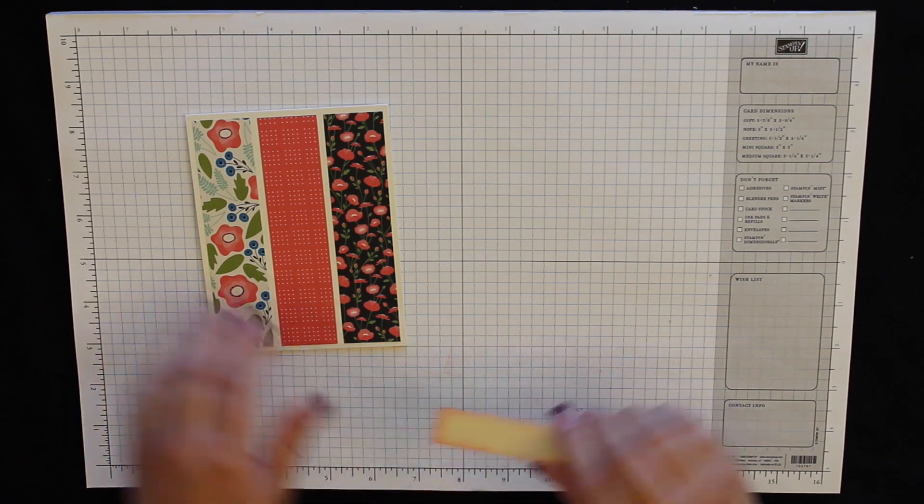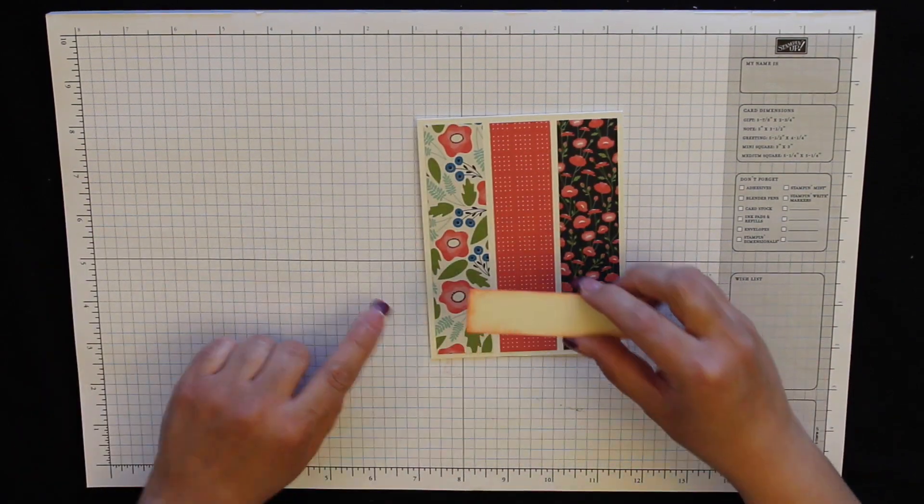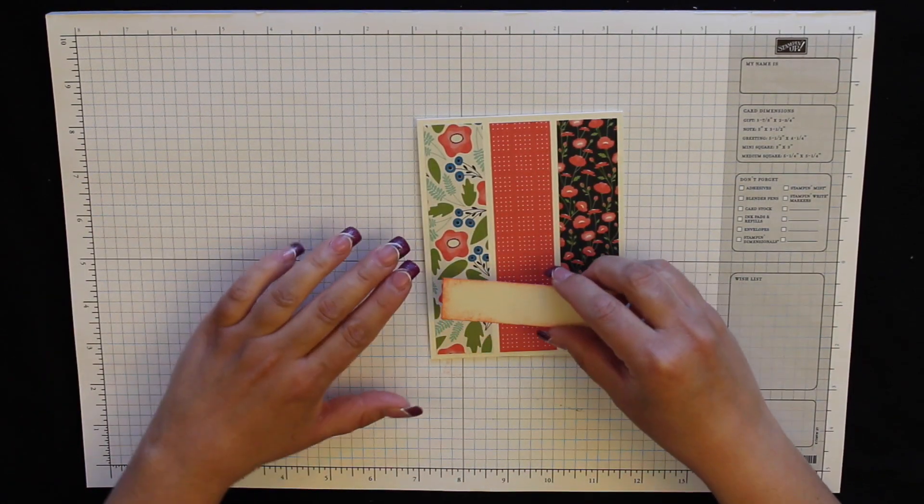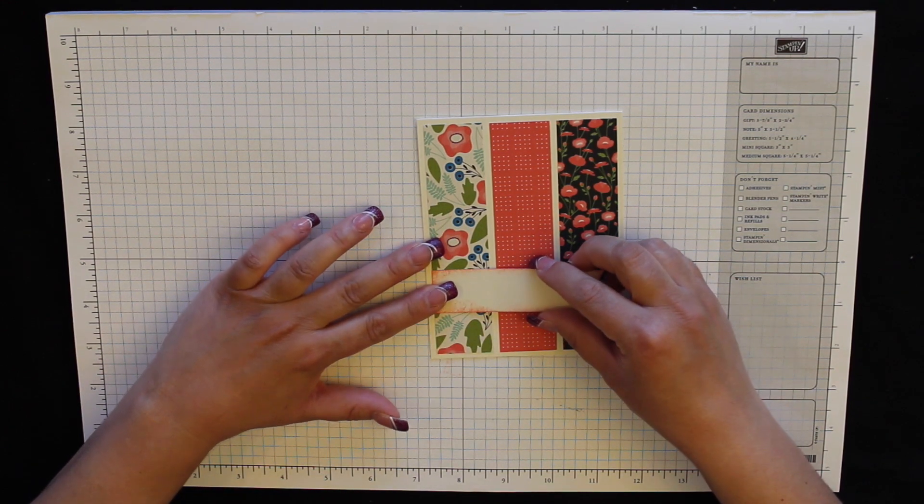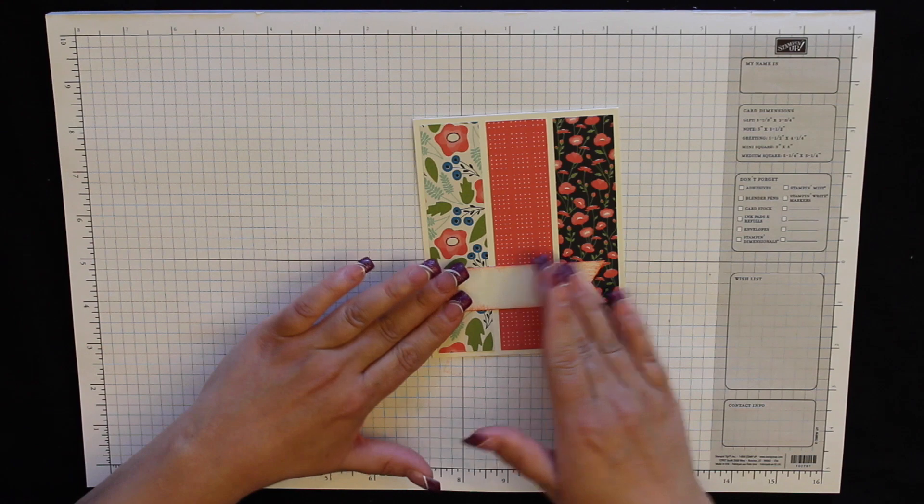And then for this you want to line this side up with this edge of the Designer Series paper, and I'm doing it about an inch up on the Designer Series paper. Put it right there and press it into place.